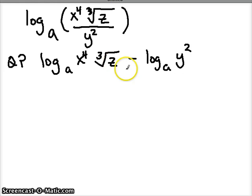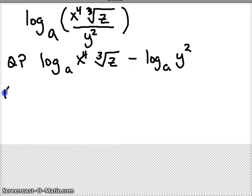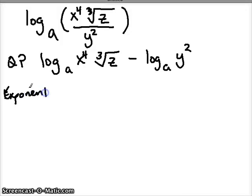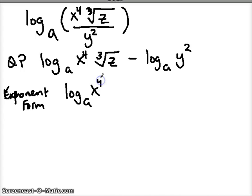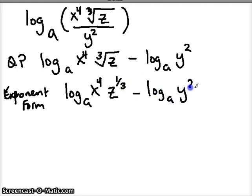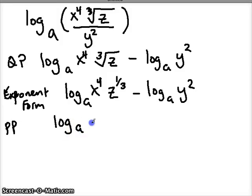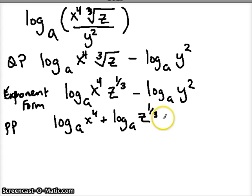Now the next thing is to get rid of our radicals. Since we want to use the power property, let's rewrite our radicals as exponents — make sure everything is in exponent form. So we rewrite: log base a of x to the 4th times z to the 1/3rd, minus log base a of y squared. Now we can use the product property. I write log base a of x to the 4th plus log base a of z to the 1/3rd, and we still have that minus log base a of y squared.